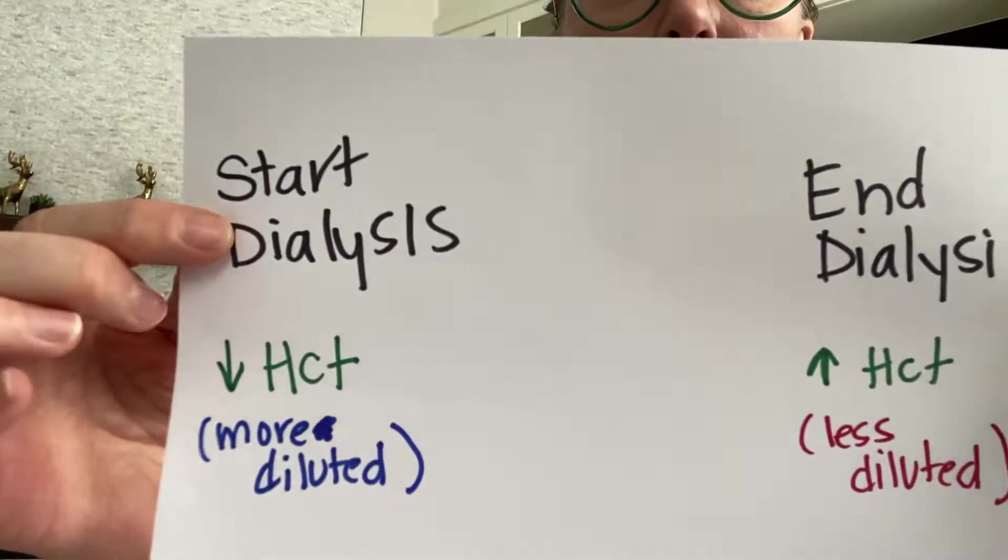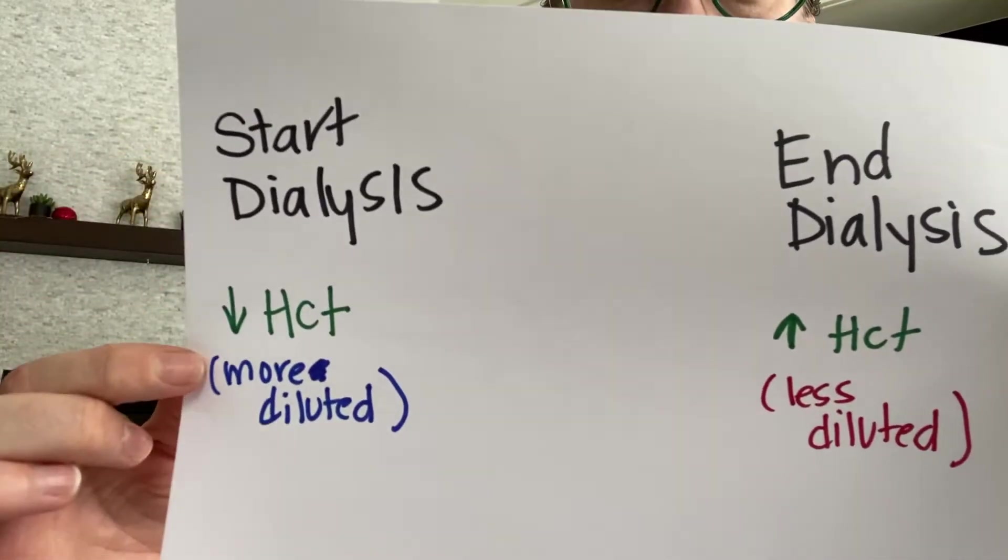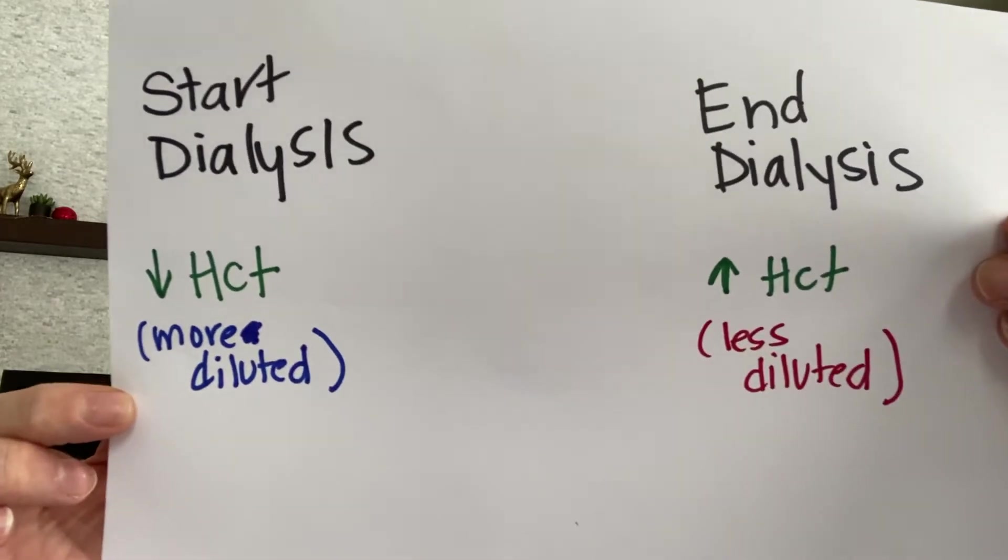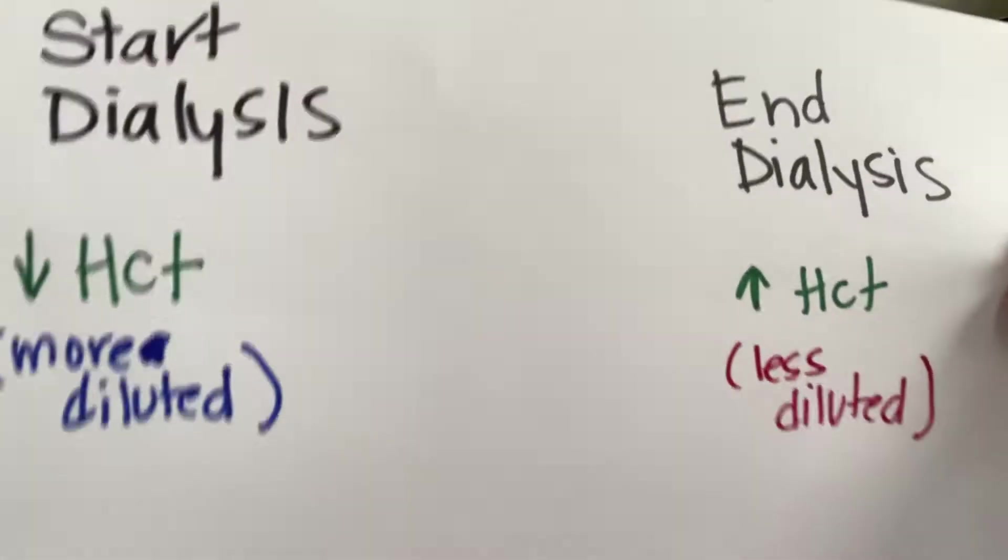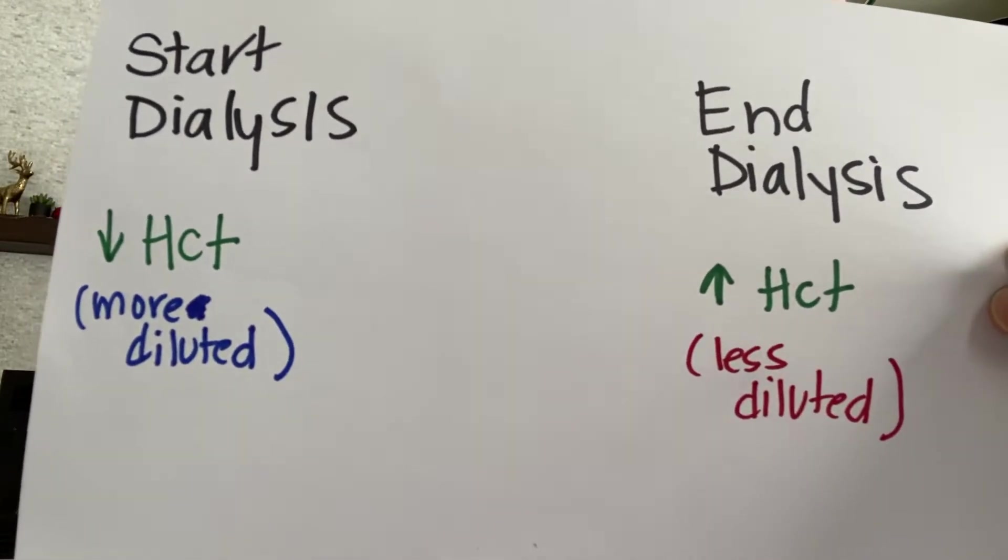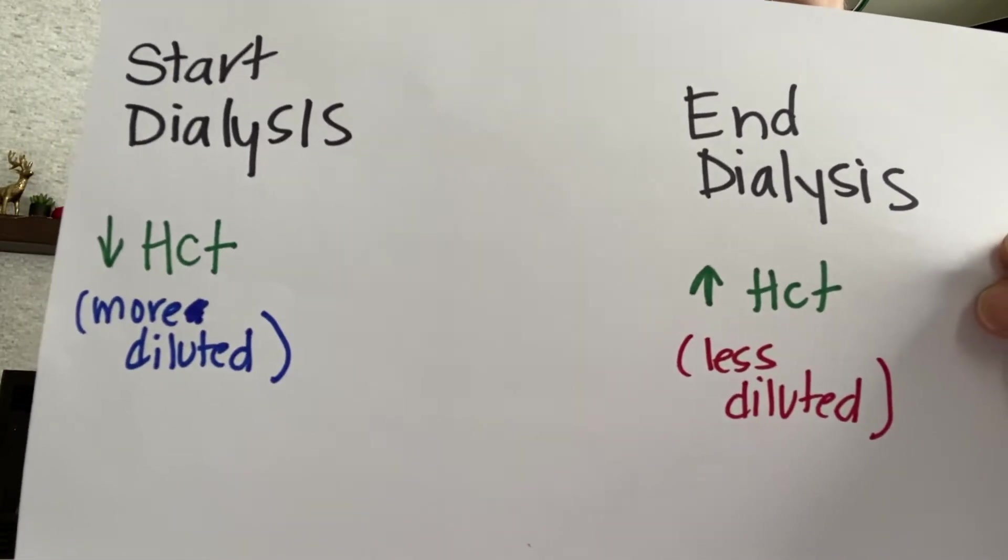If you do another visual, at the start of dialysis, the patient is going to have a lower hematocrit with more diluted blood. And at the end of dialysis, you're going to have a higher hematocrit with less diluted blood.